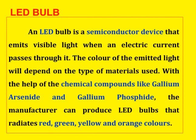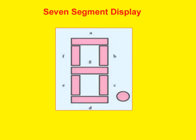Next, LED bulb. An LED bulb is a semiconductor device that emits visible light when an electric current passes through it. The color of the emitted light depends on the type of materials used. With chemical components like gallium arsenide and gallium phosphate, manufacturers can produce LED bulbs that radiate red, green, yellow, and orange colors. Next, the seven-segment display. We know the seven-segment display — it is used in our digital watches.